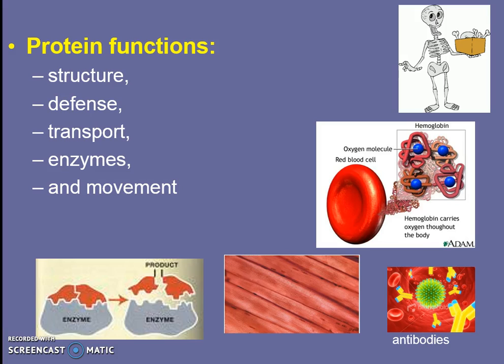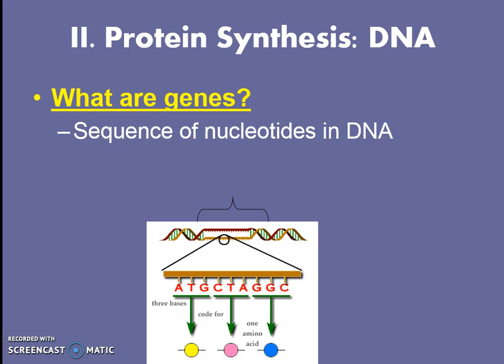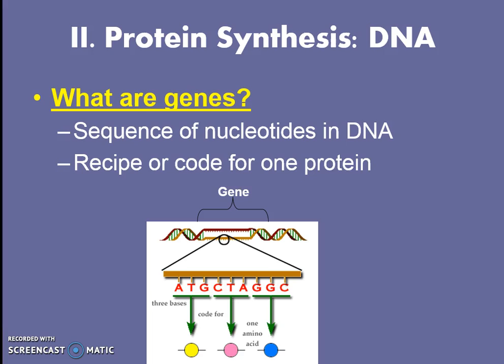Now let's jump into the thick of things. When we talk about protein synthesis, we're going to start with our best friend, DNA. DNA is made up of A's, T's, C's, and G's in a double helix. Recently we learned the definition of the word gene. A gene is a sequence of nucleotides — A's, T's, C's, and G's — in the DNA, and it is going to make a recipe or a code for a single protein. Those letters tell us the details or ingredients to make up a protein.